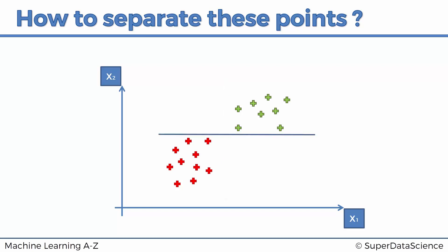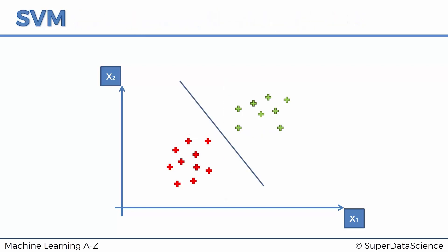There are lots of different lines we can create that will achieve the same result. They'll separate our points to two classes, but they all will have different consequences in the future. So we want to find the optimal line, and that's what SVMs are all about. They're about finding the best decision boundary which will help us separate our space into classes.